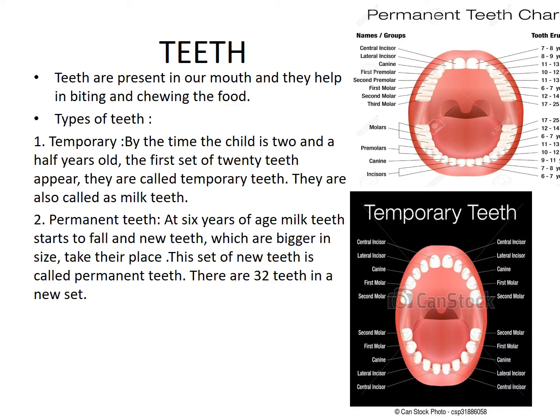In this chapter, the first topic is teeth. Teeth are present in our mouth and they help in biting and chewing the food. There are two types of teeth: temporary and permanent. By the time the child is two and a half years old, the first set of 20 teeth appear. These 20 teeth are called temporary teeth and are also known as milk teeth.